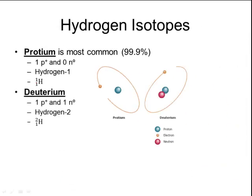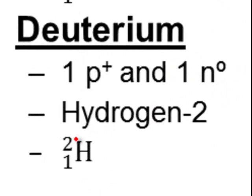The second isotope of hydrogen is called deuterium. Deuterium has one proton and one neutron. Since both protons and neutrons have a mass of 1, you can write it as hydrogen-2, or with the atomic symbol H with 2 in the top left-hand corner and 1 in the bottom left-hand corner.